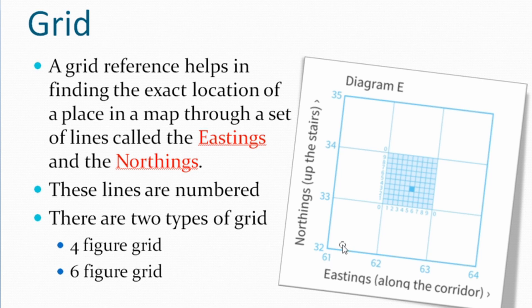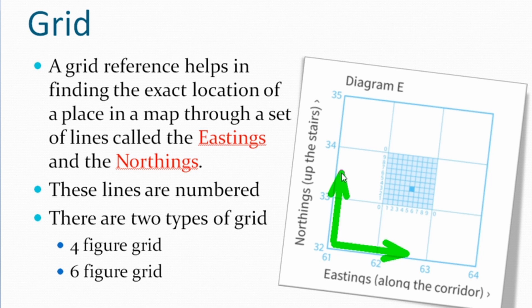Now let me give you a tip about Easting. When we talk about Easting, you are moving along the corridor — 61, 62, 63 — that is your Easting. And Northing means it is as if you are climbing the steps — 32, 33, 34 — that is the Northings. I hope you are clear. As I already told you there are two types of grid: four figure grid and six figure grid. Once you know how to find the four figure grid, it is very easy to get the six figure grid.